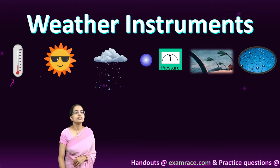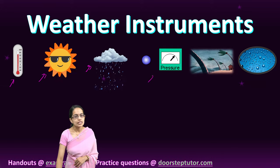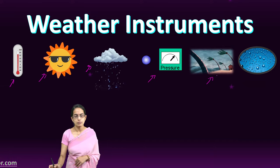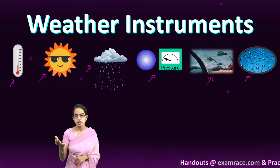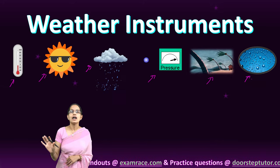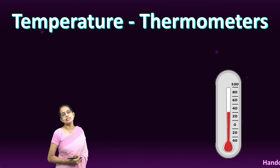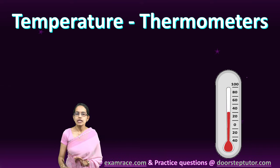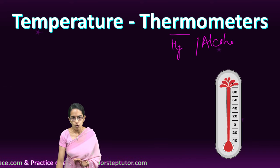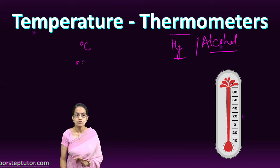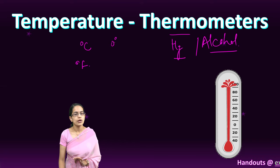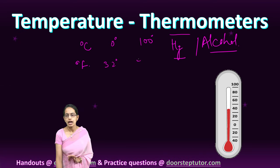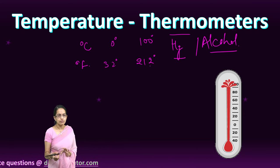Temperature is measured by a thermometer, used to measure atmospheric temperature. These thermometers can contain mercury or alcohol, and readings can be in degrees Celsius or degrees Fahrenheit. In Celsius, freezing is at 0° and boiling at 100°; in Fahrenheit, these are 32° and 220° respectively. A mercury thermometer works by the mercury rising in the tube as temperature increases.